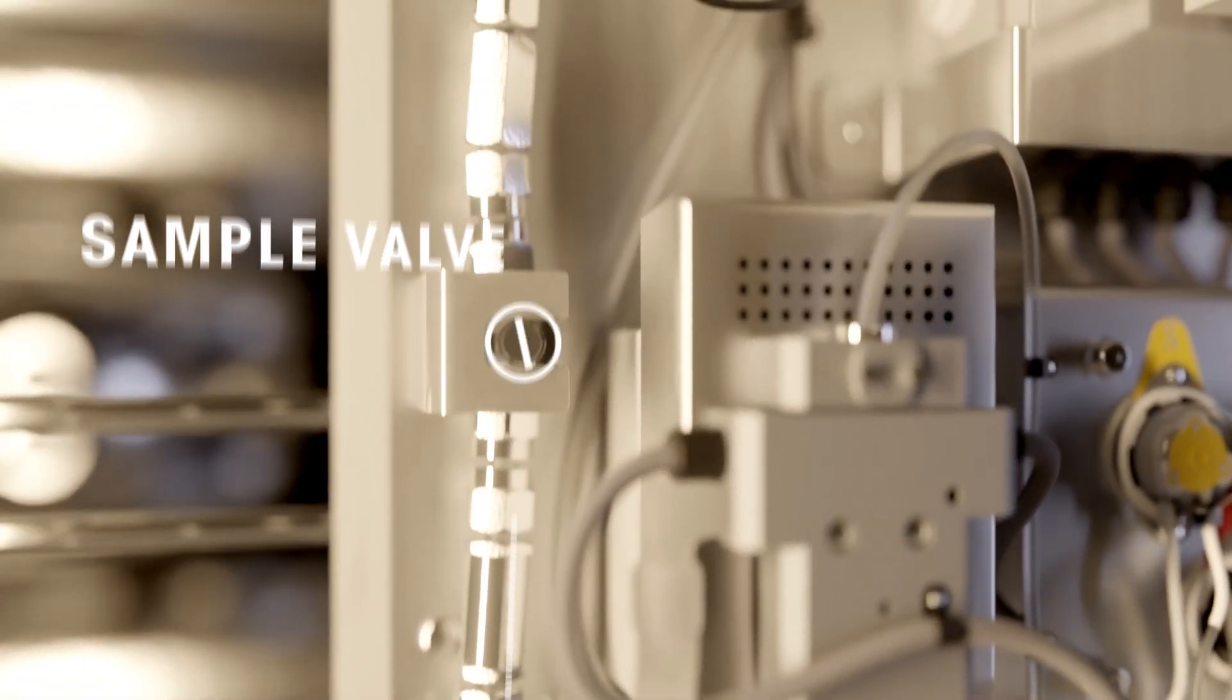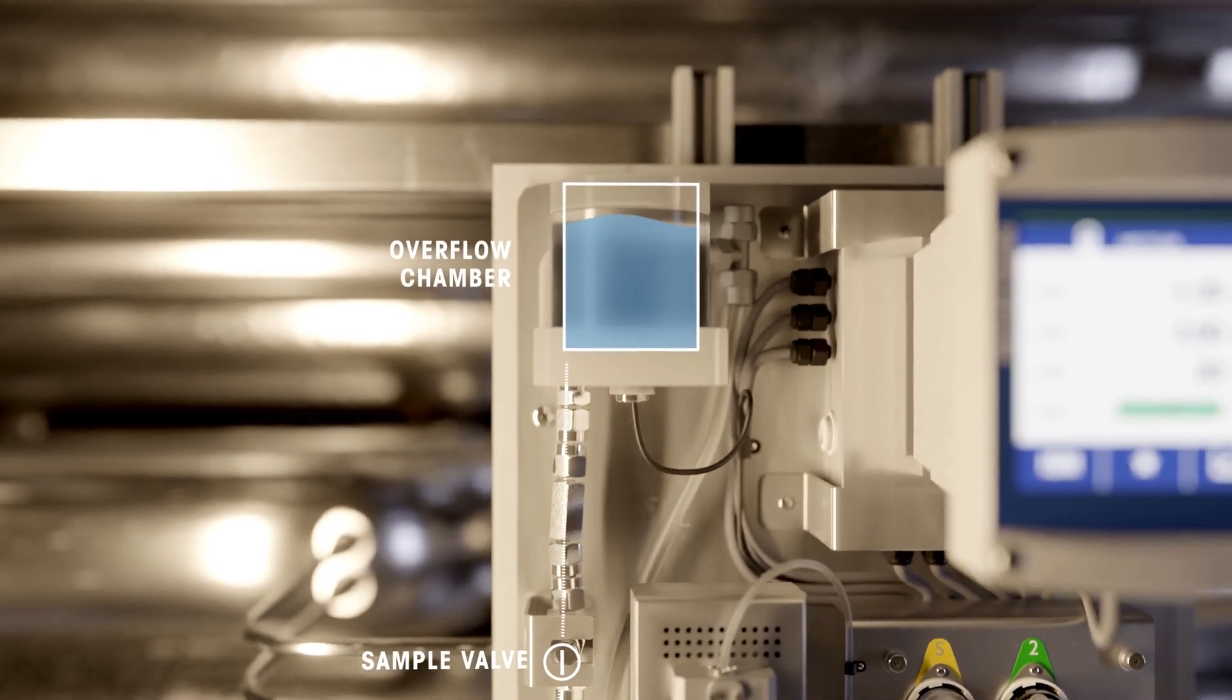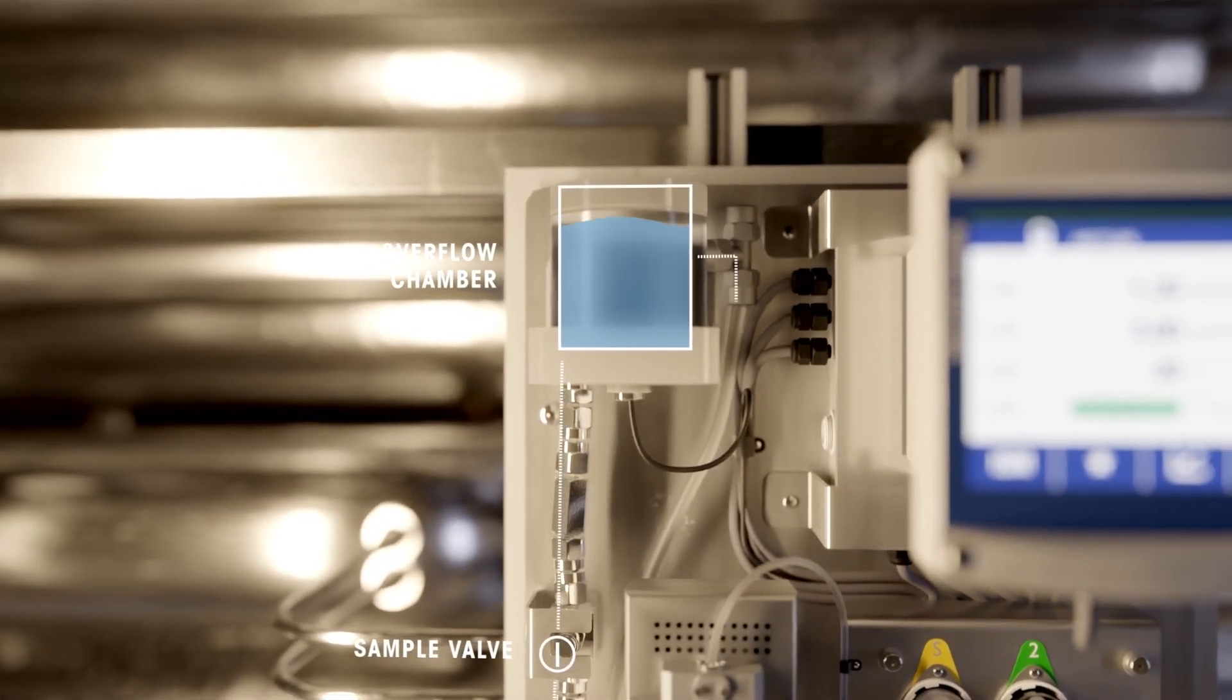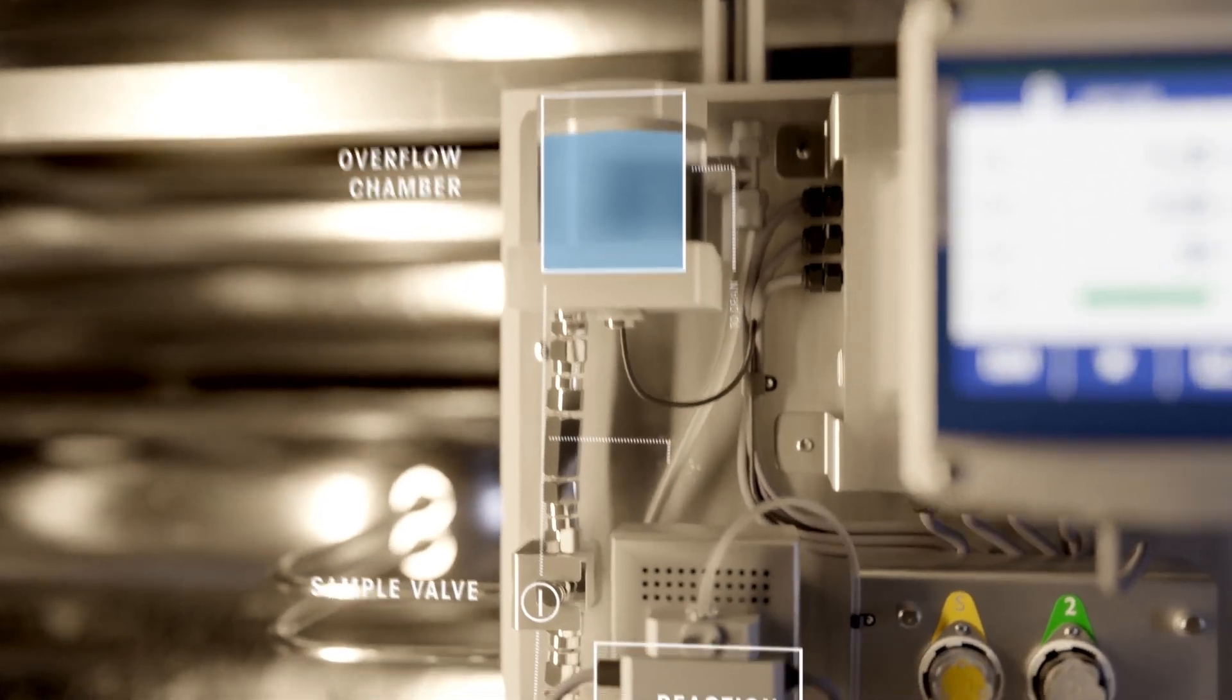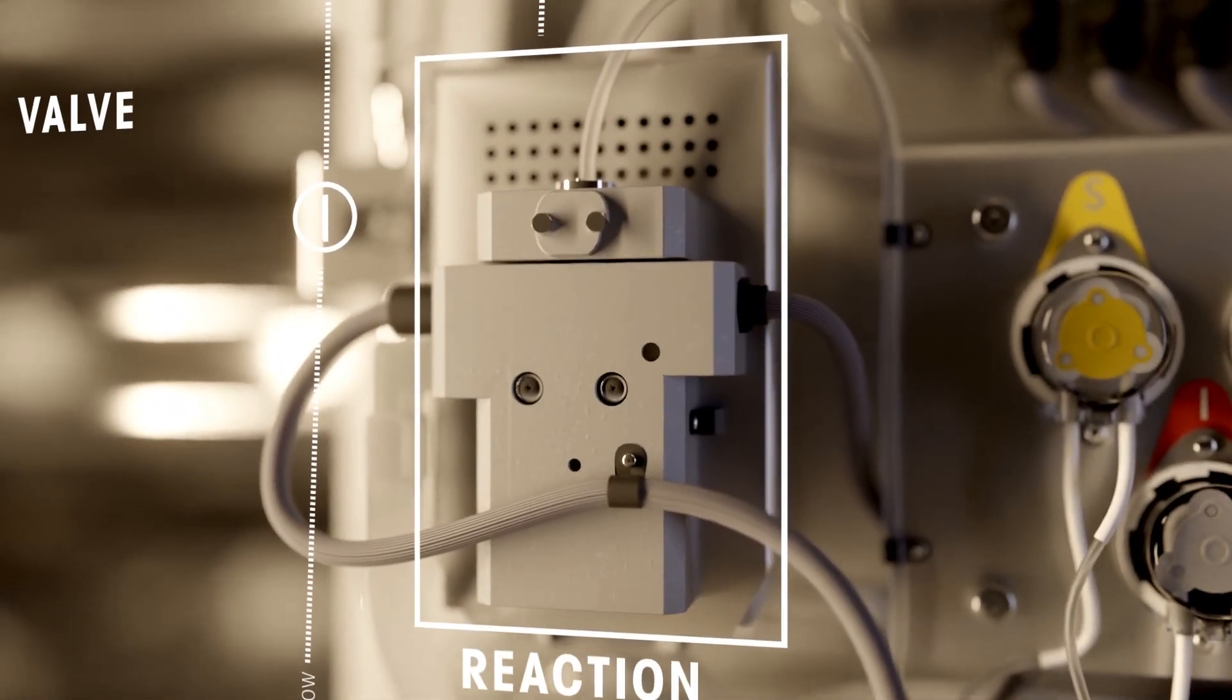Basic flow begins by opening the sample valve to the overflow chamber, creating constant gravity pressure while draining a small sample portion. A sample from the water stream enters the analyzer's reaction chamber, which contains an LED light source and a photodetector.